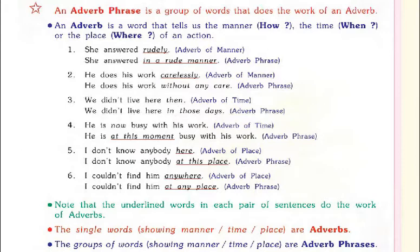Note that the underlined words in each pair of sentences do the work of adverbs. Upar humne jitne bhi examples dekhe, usme alag se humne dekha — underlined word and a group of words — that means adverb and adverb phrase. The single words showing manner, time, place are adverbs. And the group of words showing manner, time, place are adverb phrases.